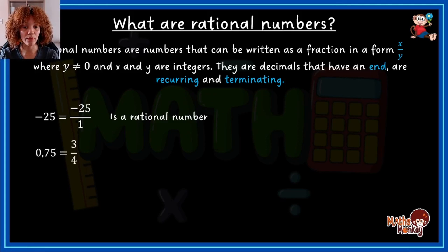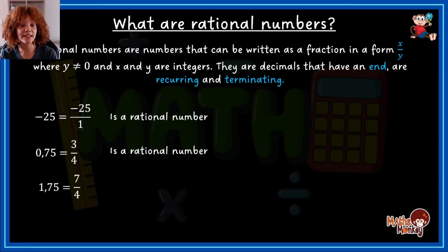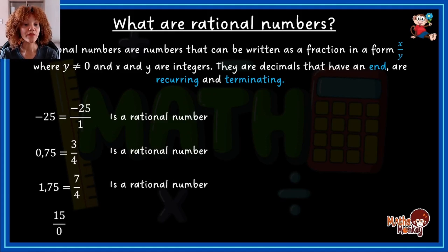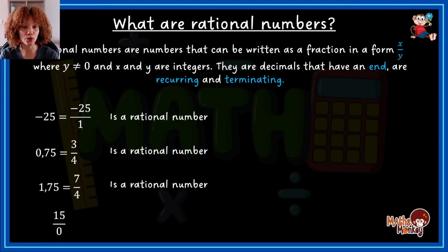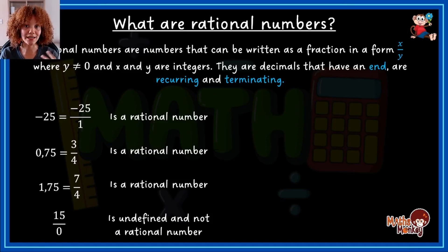0.75 is a rational number because it can be written as 3 over 4. Then 1.75 is rational — it can be written as 7 over 4. However, 15 over 0: even though this looks like a fraction, the definition says the denominator cannot equal zero, so this is undefined and it is not a rational number.